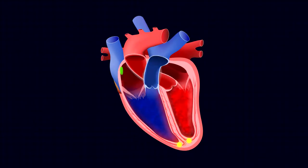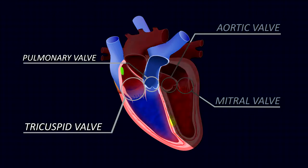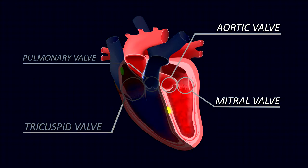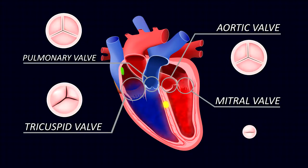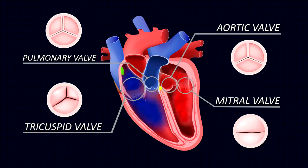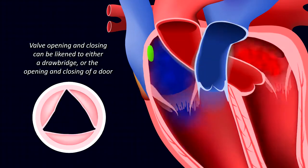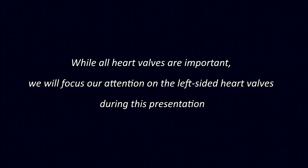The animation shows that the heart valves open during certain phases of the heartbeat and then close during other phases. The valves on the right side of the heart are called the tricuspid and pulmonic valves. The valves on the left side are called the mitral and aortic valves. Each valve is extremely thin, very flexible, and when operating normally opens up all the way and then closes tightly so that there is no significant leakage backwards. While all heart valves are important, we'll focus our attention on the left-sided heart valves during this presentation.